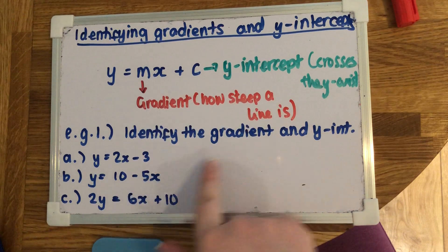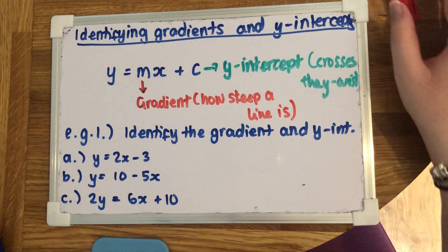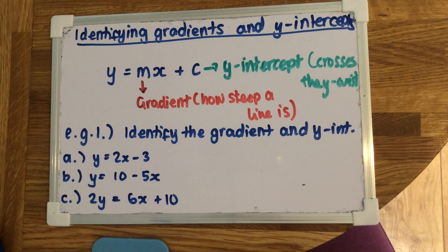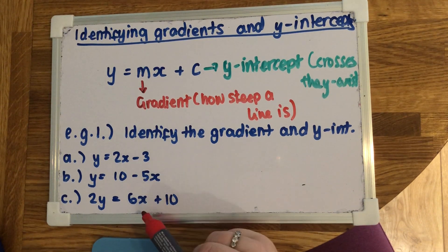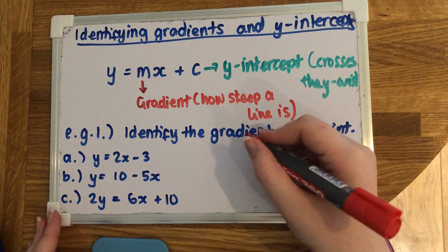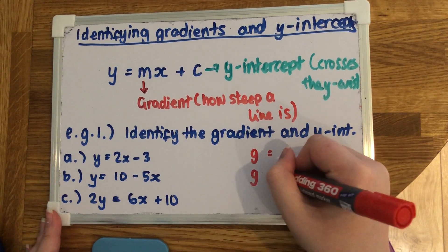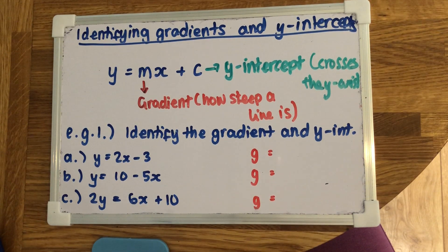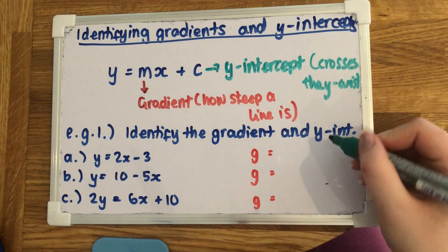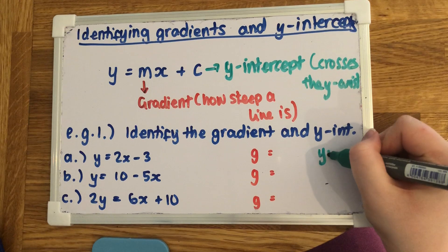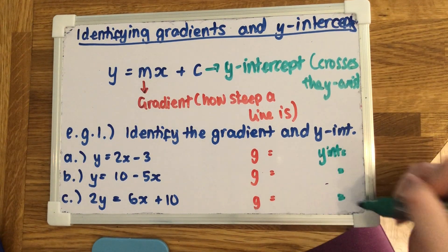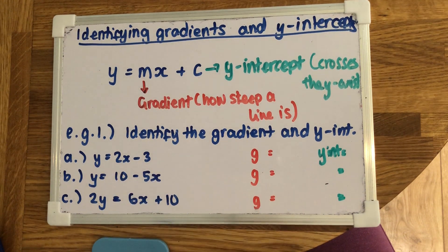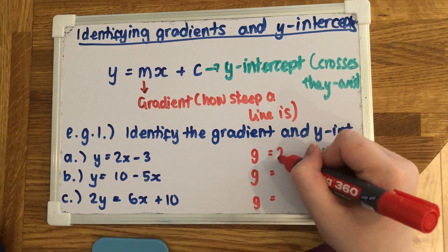So using this information, we are then able to answer questions like these. First thing we need to identify from these three equations, the gradient and the y-intercept. So as we've just said, the number that's in front of the x is the gradient. So for the first one, the number that's in front of the x is the 2. So the gradient will just be 2.